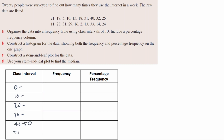Write 'total' at the bottom. Now count the data in each class. Between 0 and 10 there are 2. Between 10 and 20 there are 8. Once you've counted all groups you should get 2 + 8 + 5 + 4 + 1 = 20. Since the question says 20 people were surveyed, there should be 20 data points — this is a quick way to check your counting is correct.